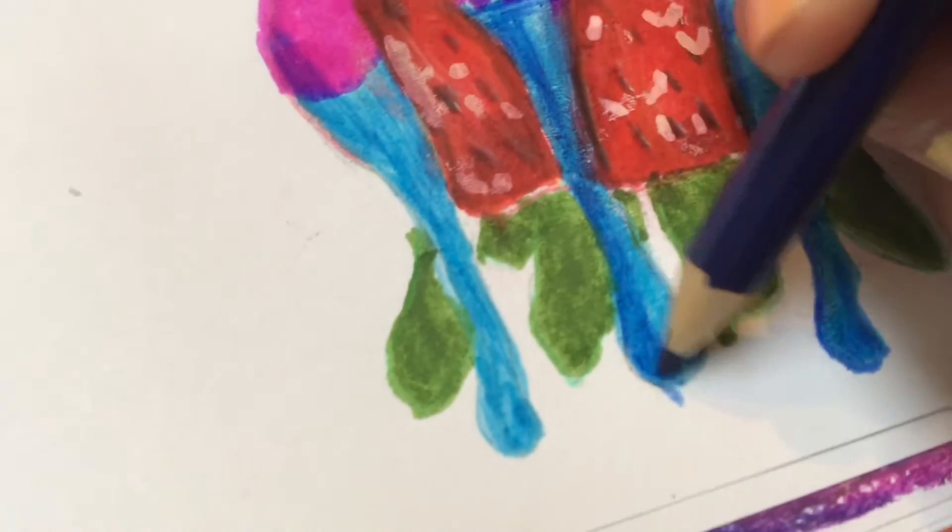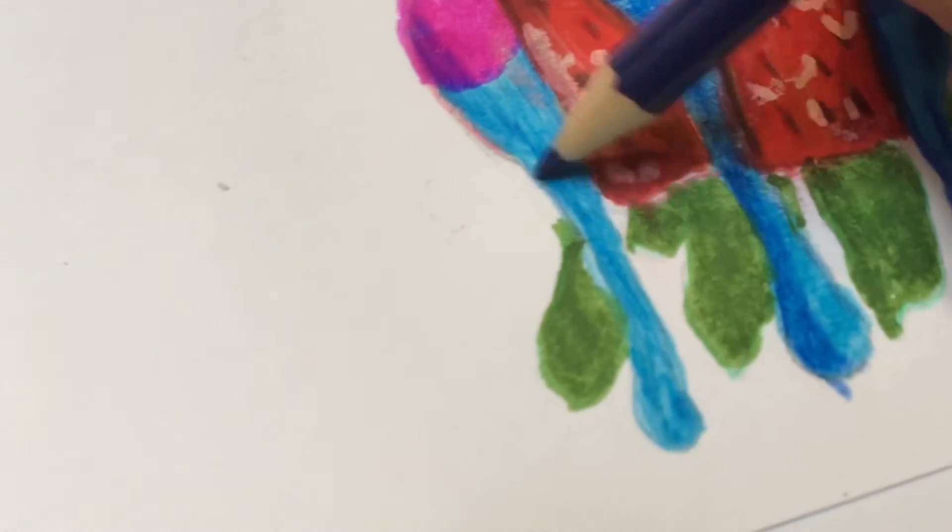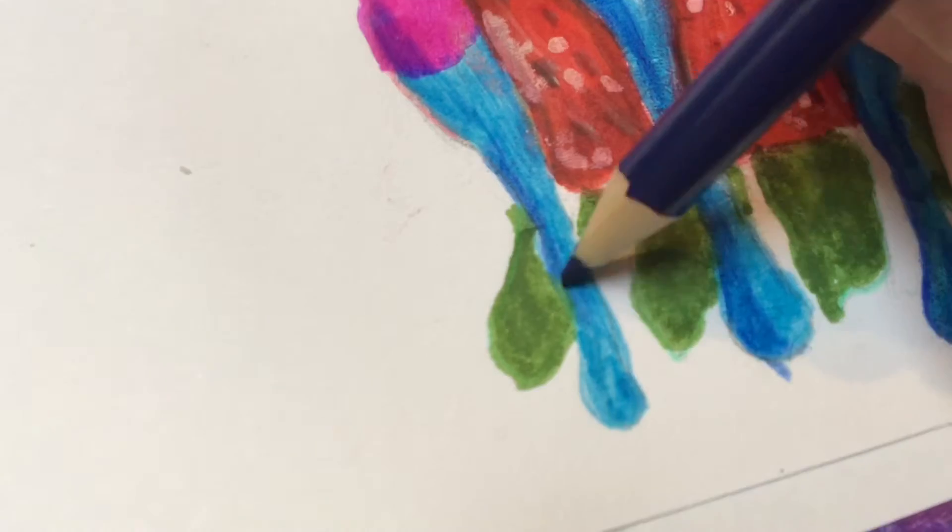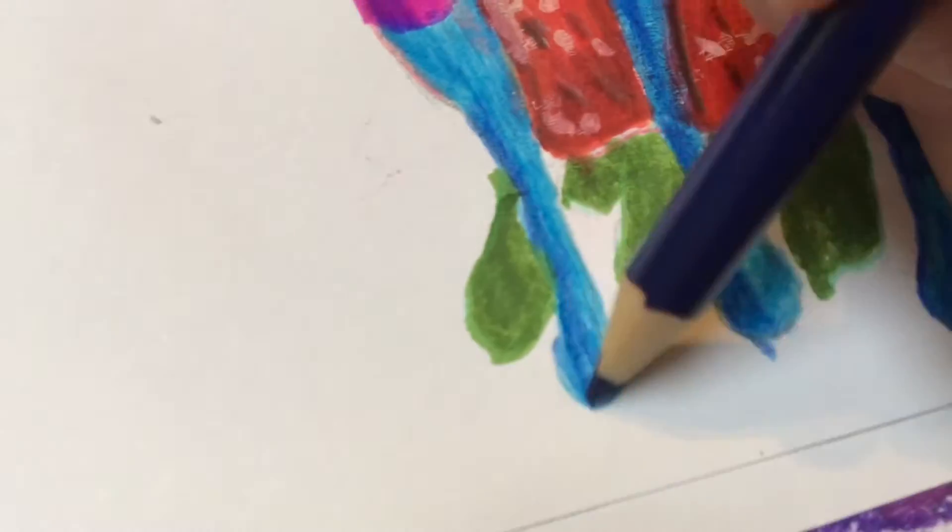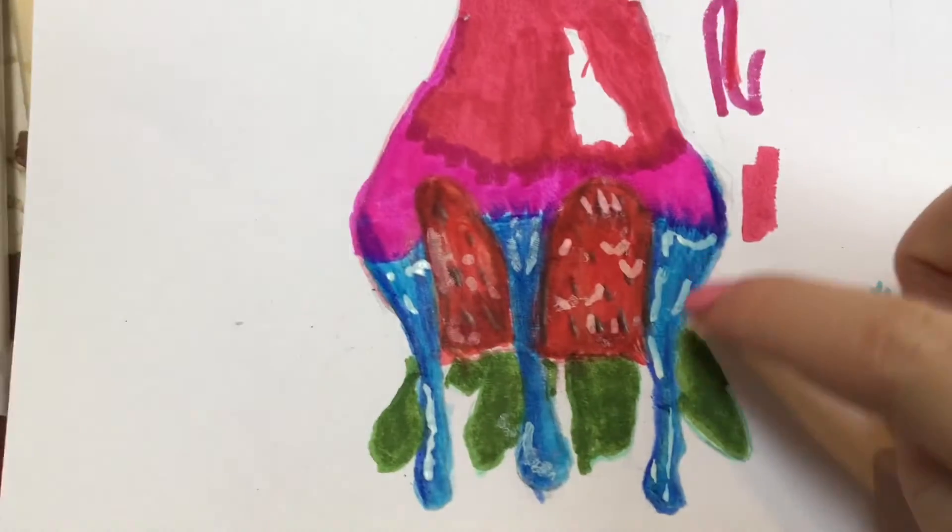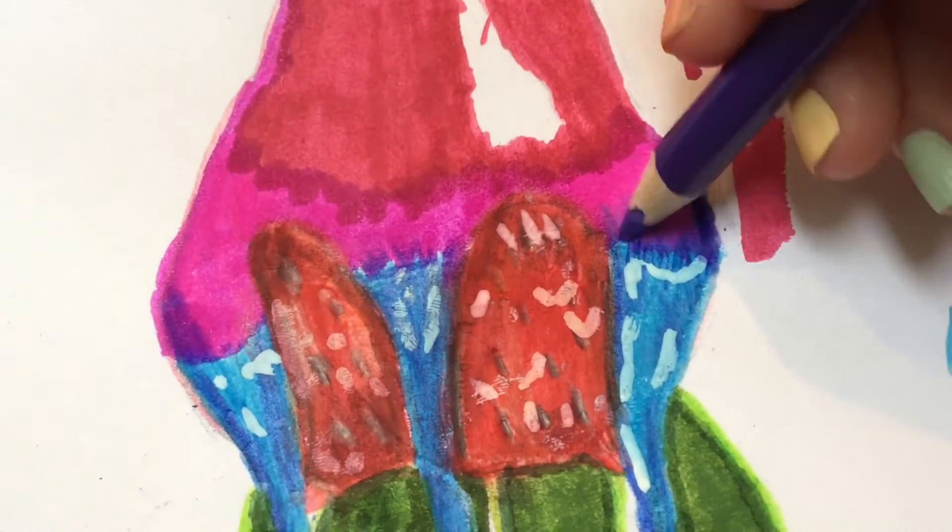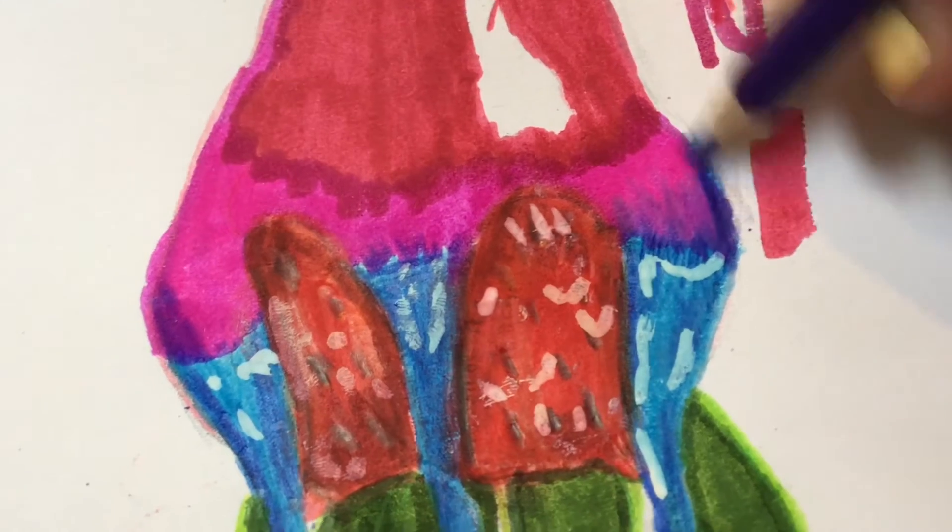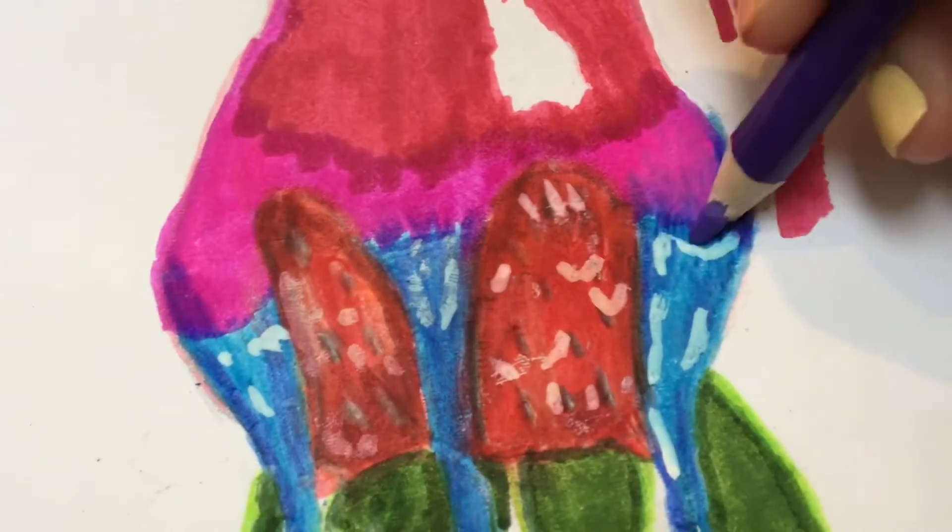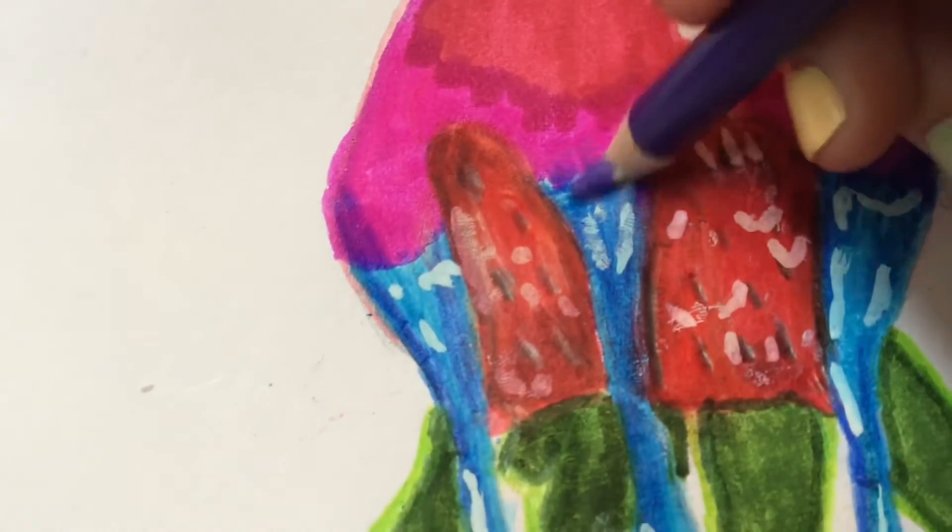Then I took a blue pencil crayon and added it on the side of the drips and then I added highlights. Now I'm taking a purple pencil crayon and I'm adding it around the strawberry to make blue and pink blend better.